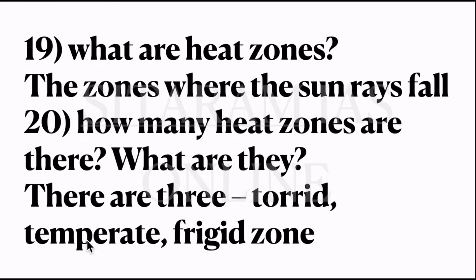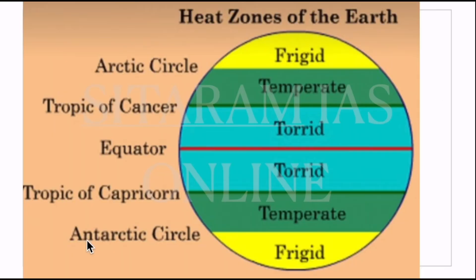19th question: what are heat zones? Heat zones are the zones where the sun rays fall. And 20th question: how many heat zones are there? There are actually three heat zones: torrid zone, temperate zone, and frigid zone. The blue color one is called the torrid zone, the green ones are called the temperate zones, and the yellow region is called the frigid zone.